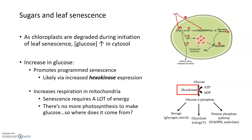Since the increase in respiration is happening in the mitochondria and the process of senescence requires a tremendous amount of energy, there needs to be an energy molecule available to generate the ATP needed for senescence. Glucose in the cytosol can increase respiration for a while, but eventually that glucose is going to run out. Since senescence still needs more energy and photosynthesis can't make more because the chloroplasts have been degraded, where does the sugar to power respiration come from after cytosolic glucose is depleted?